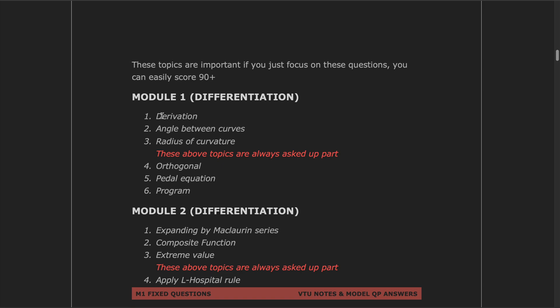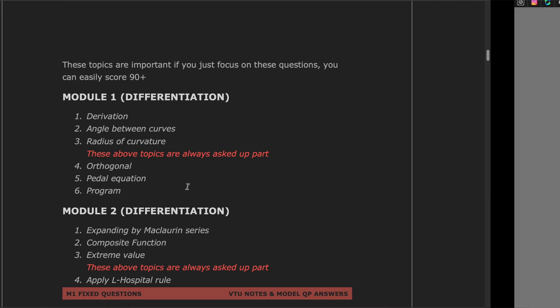In the first module, the first three questions are always about derivation, angle between curves, and radius of curvature. The rest three questions are always about orthogonal, pedal equation, and program. Each module has only two questions and each question has three sub-questions — referred to as the upper part and the lower part.